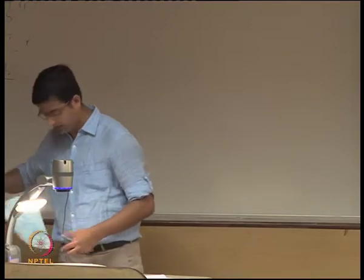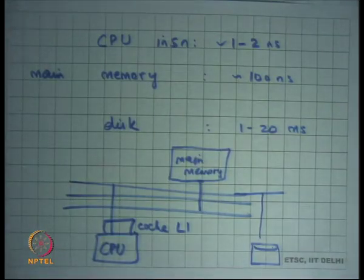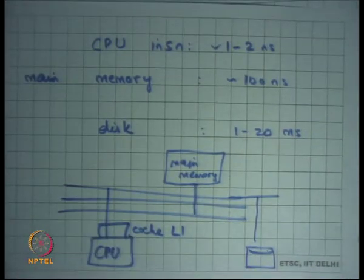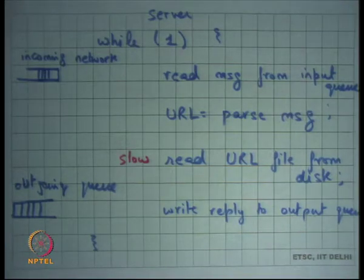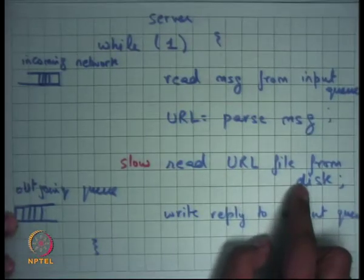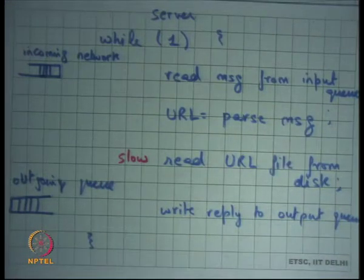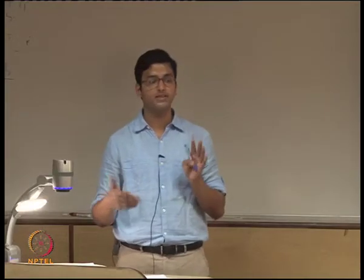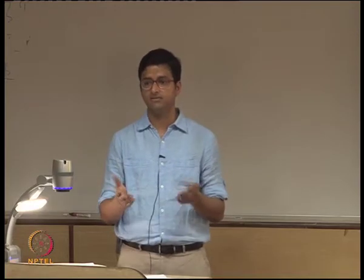This brings us to a number of roughly 1 to 20 milliseconds to do a disk access. For the web server, this means every request will take roughly 1 to 20 milliseconds because the disk access is by far the slowest step — everything serializes here. The throughput is 1 divided by 10 milliseconds, which is roughly 100 requests per second.